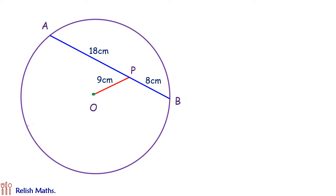If we'll extend this OP, let's say it's intersecting at point C and point D at the circumference. Now this CD is passing through the center of the circle.